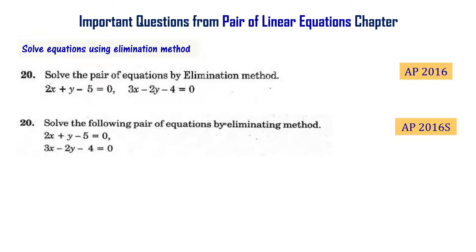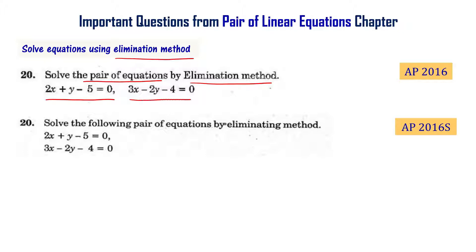Solving a pair of linear equations in two variables using the elimination method is one of the important topics. Solve the pair of equations by elimination method: 2x plus y minus 5 equal to 0, and 3x minus 2y minus 4 equal to 0.